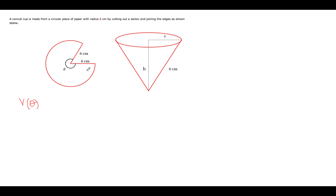If we take this thing and join this point to this point, we will wind up with this cone, and this 6 cm radius would become this edge of the cone. The circular top of the cone would then be this arc that is left when we cut the piece out.